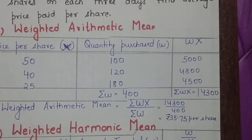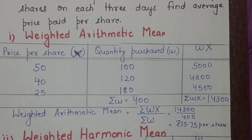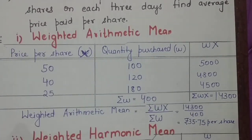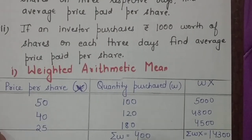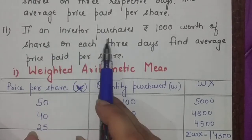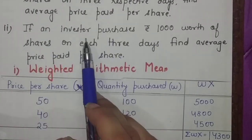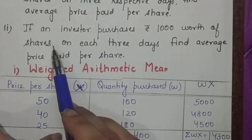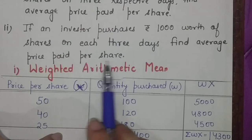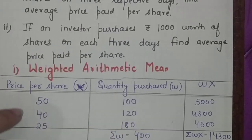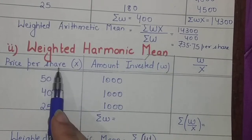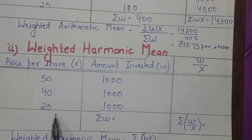This is how the first part is calculated, where we calculated weighted arithmetic mean as per the requirement of the question. In the second part they are saying: if the investor had purchased 1000 rupees worth of shares on each day, then what was the average price paid per share? This is X - the price per share is 50, 40, and 25, and the amount invested is 1000 for each day.